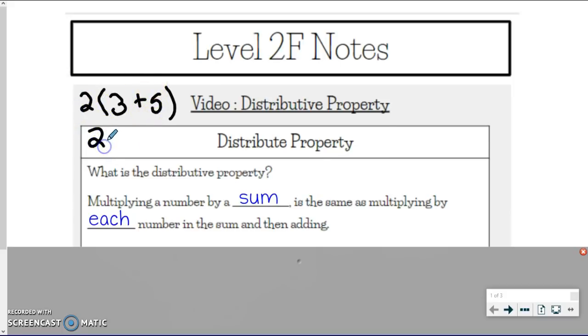So if this is what I was doing, I would do the sum first. So I'm going to do 2 times, I'm going to do the sum part first and I'm going to get 8 because 3 plus 5 is 8. And then 2 times 8 equals 16. So that's one way I could solve this problem.